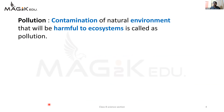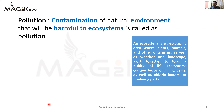Simple shabdoN mein agar hum ise samjhein to contamination yani ganda hona - kiska? Natural environment ka, yani hamare surrounding ka ganda hona jo harmful hoga hamare ecosystem ko - use hum kahenge pollution. Ecosystem - what does this word ecosystem mean? Ecosystem is a geographical area jahan pe living or non-living, yani biotic and abiotic factors ek dusre ke saath interaction karne lagte hain - use hum kehte hain ecosystem. So pollution can be defined as contamination of natural environment that will be harmful to ecosystem - that is the definition of pollution.